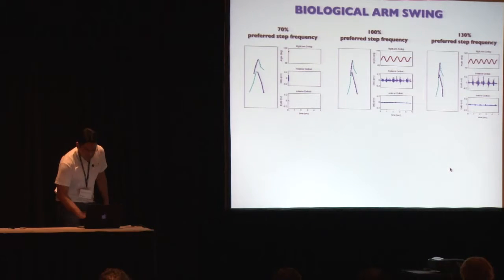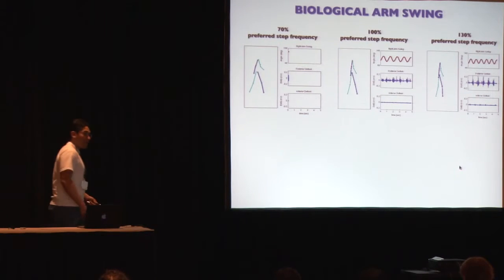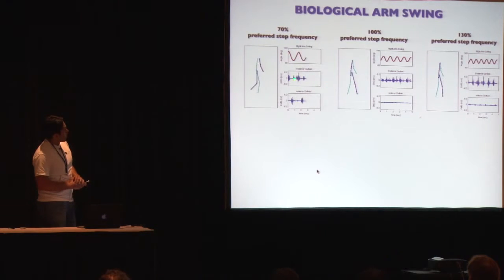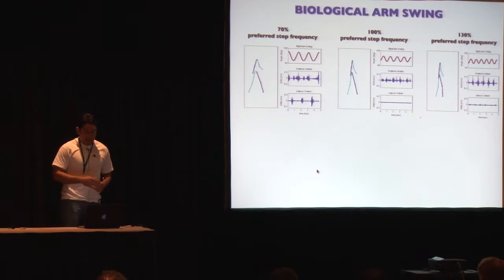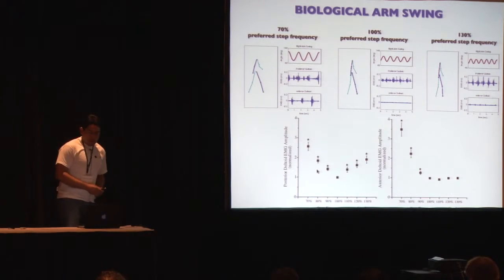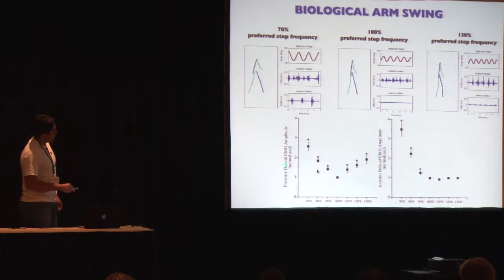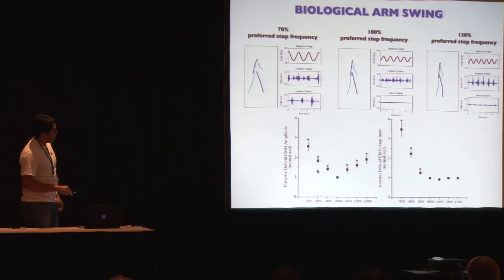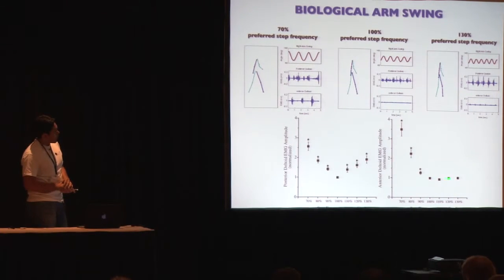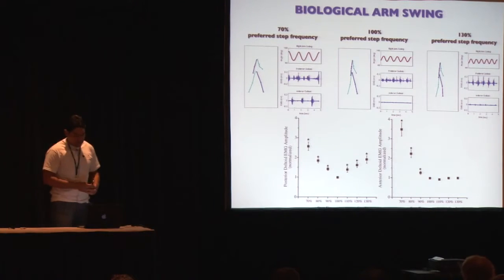At the slowest step frequency, where subjects take very long steps at the same speed, we see a dramatic increase in the amplitude of arm swing, an increase in posterior deltoid EMG activity, and also bursts of the anterior deltoid — suggesting that forward arm motion is now under some neural control. Looking at average trends across conditions, the posterior deltoid EMG increases at both faster and slower step frequencies relative to preferred, while the anterior deltoid remains relatively silent at faster frequencies and then increases at slower step frequencies.